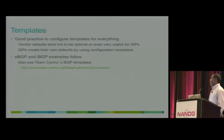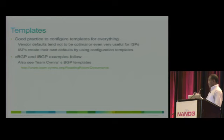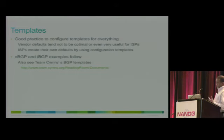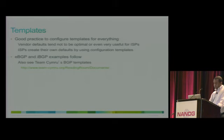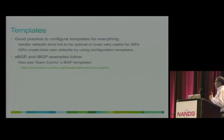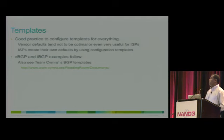Templates: if you have several IBGP peers from a route reflector, most of those configurations are the same. You can combine similar configurations into a template and apply it to individual peers. Same thing with policy, prefix lists, and so on. It's a good practice to use templates for everything — even if you have just one peer now, you may have multiple in the future. It's better to start from a template even if you don't need it today.